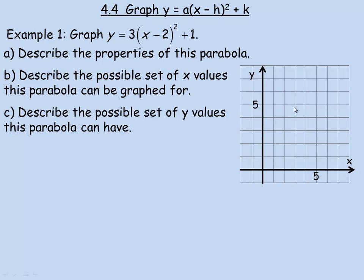In this video we'll take a look at how to graph the general vertex form y equals a times x minus h squared plus k of a parabola or a quadratic function. We're going to take a look at a few examples. The one on this page we're asked to graph y equals 3 times x minus 2 squared plus 1, and we're asked to describe the properties of the parabola, graph it, and then answer questions b and c.